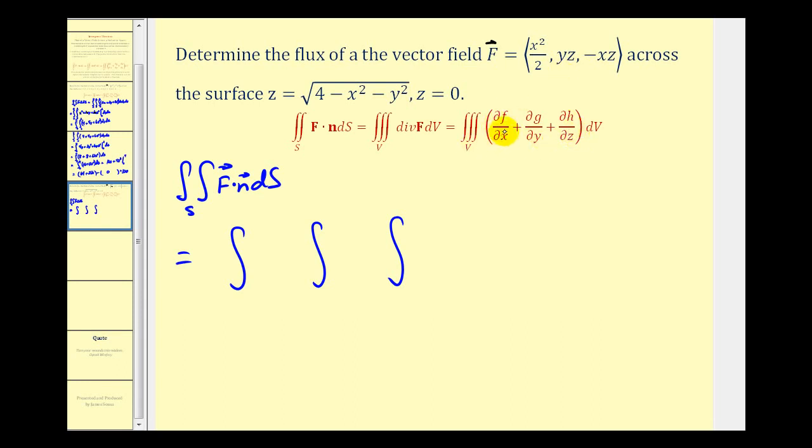The partial derivative of F with respect to X gives us X, plus the partial derivative of G with respect to Y gives us Z, plus the partial derivative of H with respect to Z gives us negative X. Let's replace differential V with dZ dy dx.